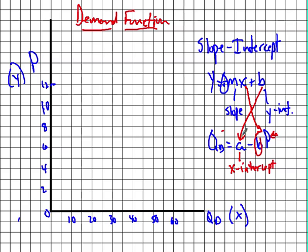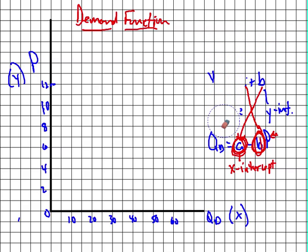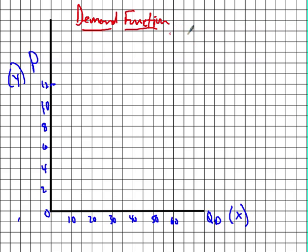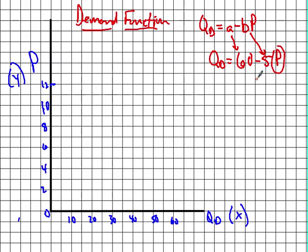Qd equals a minus bp. What we're going to do in this video is plot it out, then look at what happens when we change the x-intercept and what happens when the slope changes. So let's take an example: the quantity demanded equals 60 minus 5p. The 'a' is 60, so we know the x-intercept is 60. 5 is b, the slope. We're going to plug in some prices and see what happens to the quantity demanded.